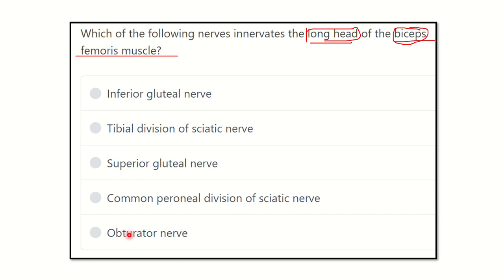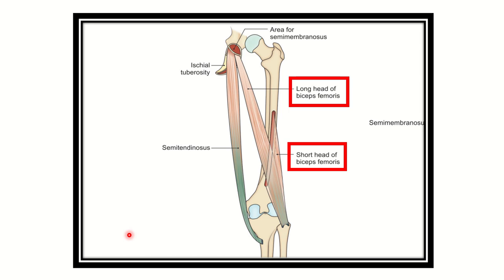Here we can see the biceps femoris muscle. It arises from the ischial tuberosity and inserts into the fibula. The long head arises from the ischial tuberosity, while the short head arises from the shaft of the femur.